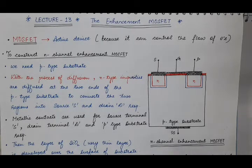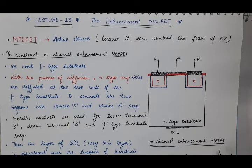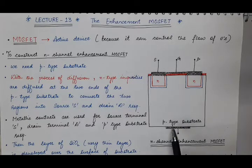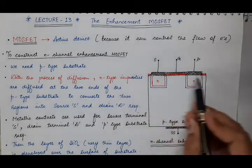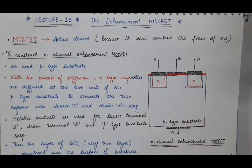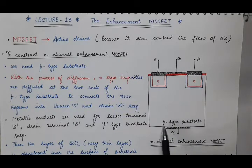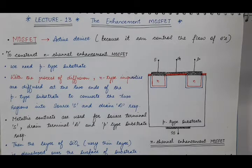First of all, to construct an N-channel enhancement type MOSFET, we need a P-type substrate. We call this the substrate because the whole MOSFET will be fabricated over this layer of P-type substrate. The body over which the whole MOSFET is being constructed is known as the substrate.